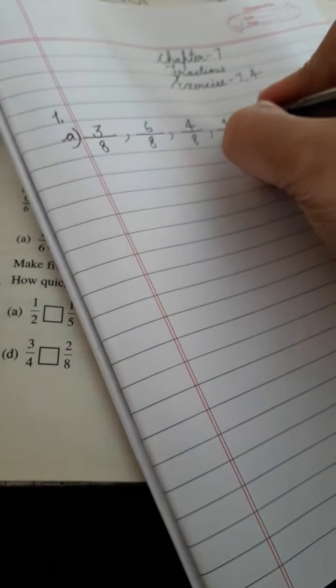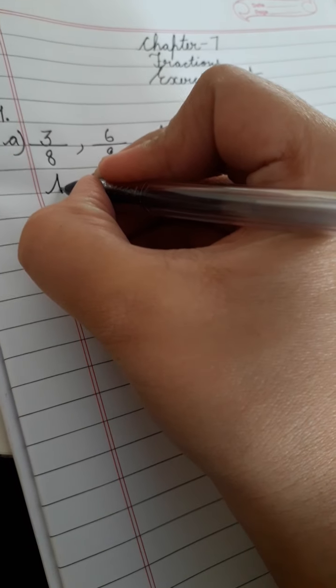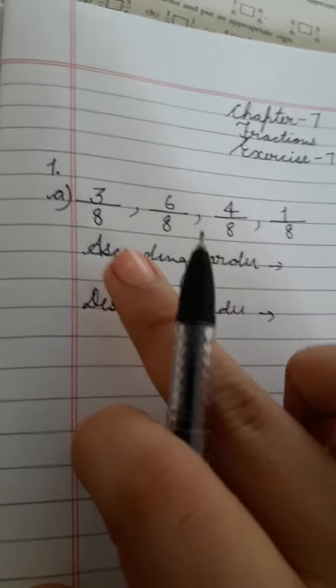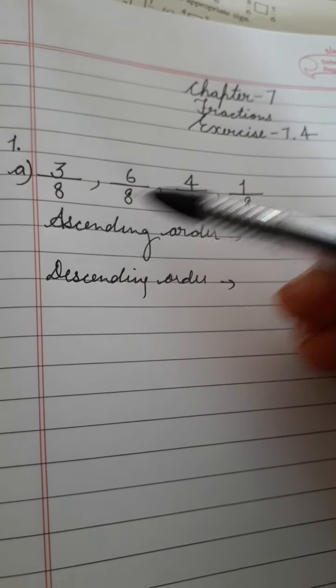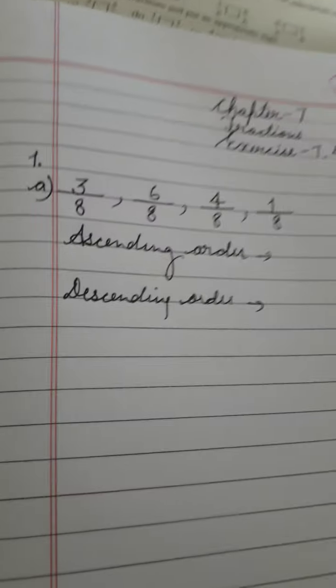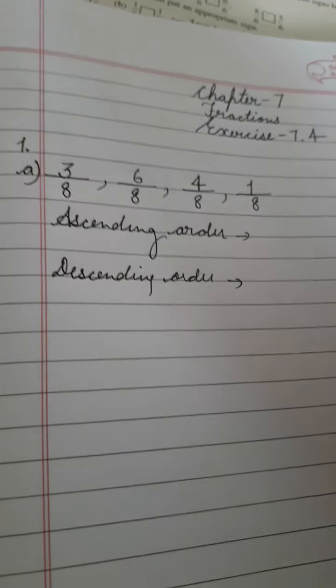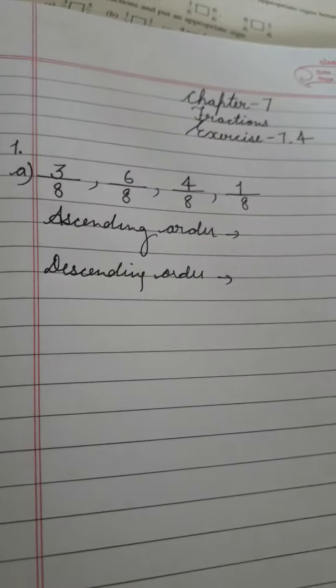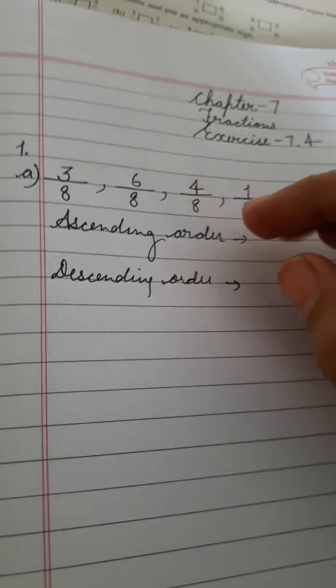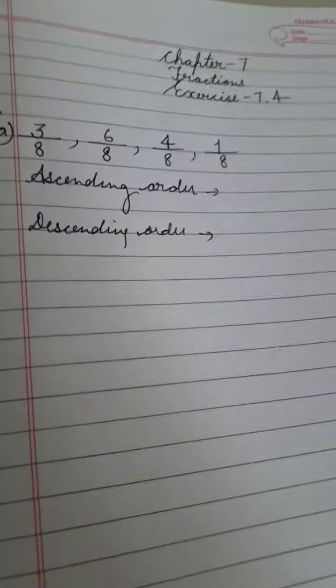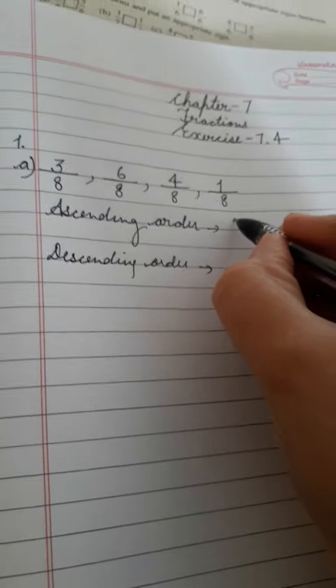We have written the shaded portion fractions for all the figures. Now we need to arrange them in ascending and descending order. Firstly we will arrange in ascending order. Notice that in these fractions the denominator is the same — it does not change. We have 3 by 8, then 6 by 8, then 4 by 8, and 1 by 8. Since the denominators are the same, we will compare the numerators.